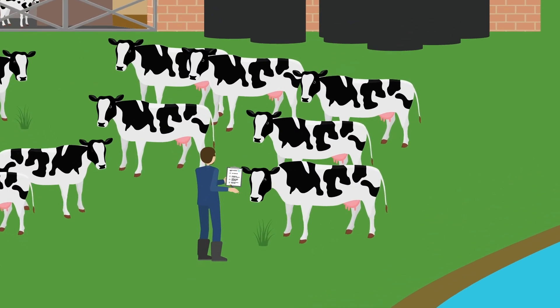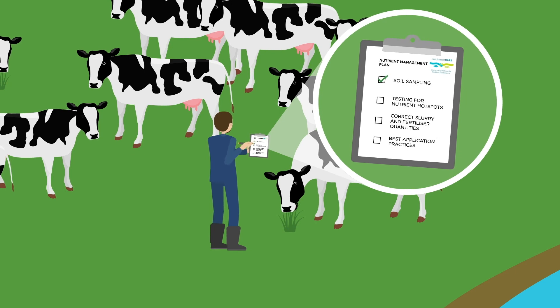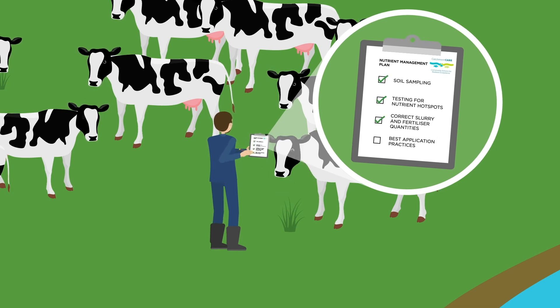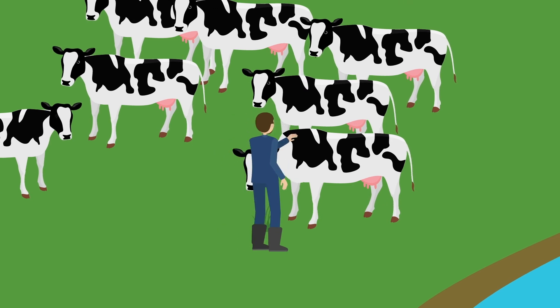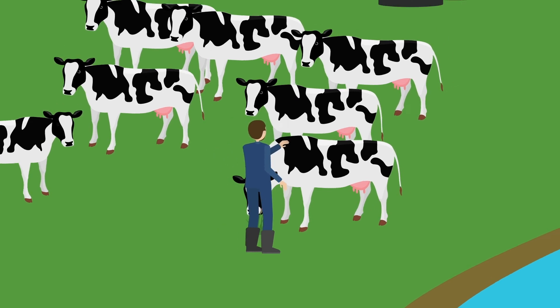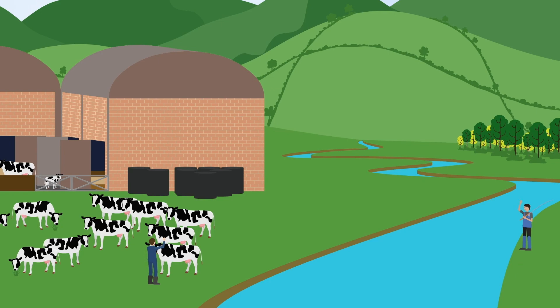By following Catchment Care's nutrient management guidelines, farmers can use their resources more efficiently, increasing the health of their land and livestock whilst creating cleaner environments for local communities to enjoy.